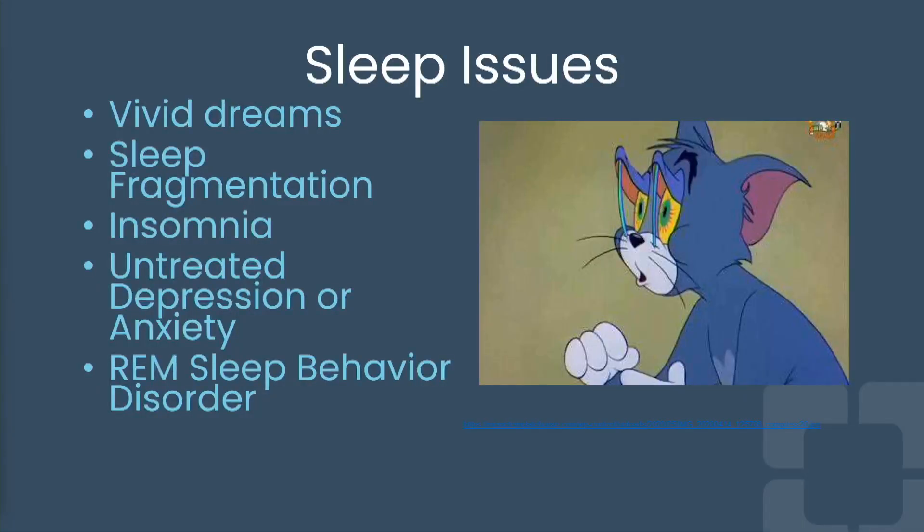Sleep issues are also very common in Parkinson's. People typically have vivid dreams or REM sleep behavior disorder, meaning they act out their dreams at night — flailing, kicking, punching, or yelling. Sleep fragmentation is also common, where they fall asleep okay but wake frequently throughout the night. Insomnia can often be related to untreated depression or anxiety. There are definitely treatment options for this, and a sleep specialist presentation is coming up next in this room.